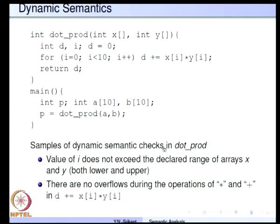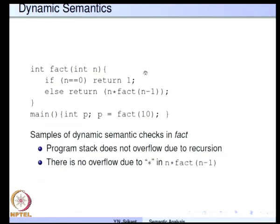If the values of variables a and b — the array components — happen to be extremely large, then the multiplication x[i] star y[i] could cause an overflow. Similarly, if the arrays are too large and too many components are being multiplied and added into d, then d could also cross the limit. But assuming that a and b have small values, such overflows will not occur.